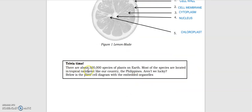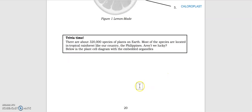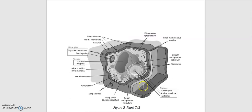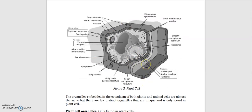Trivia time: There are about 320,000 species of plants on earth. Most of the species are located in tropical rainforests like our country, the Philippines. So aren't they lucky, very lucky. Below is the plant cell diagram with embedded organelles. Here it is - you can see it's angular because of the cell wall.